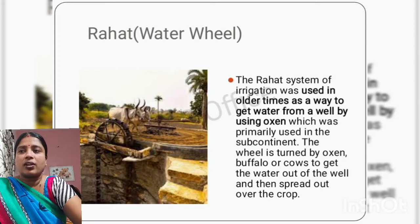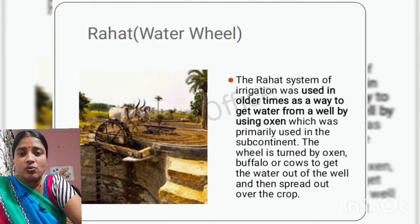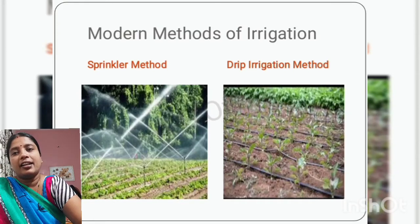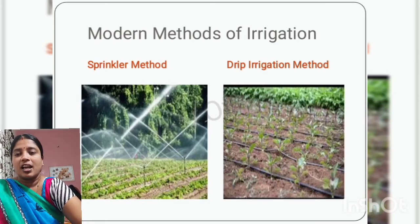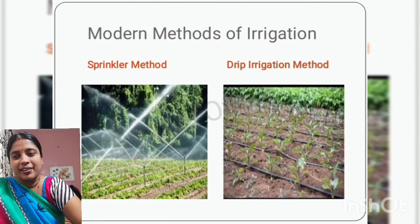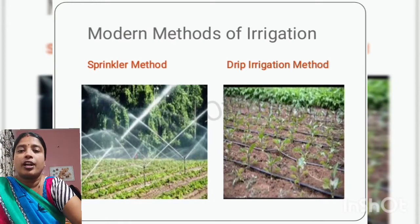These were the traditional methods — the methods followed since long. But nowadays, modern methods of irrigation have been evolved with the consideration that less water gets wasted. The two modern methods of irrigation are sprinkler irrigation and drip irrigation. Sprinkler irrigation causes artificial rain on the field and is used where there is enough water availability. Drip irrigation is used where there is less water availability and you don't want water to get wasted.